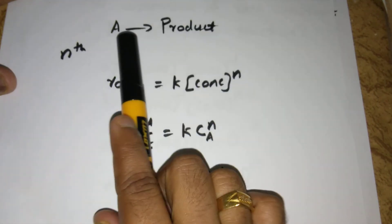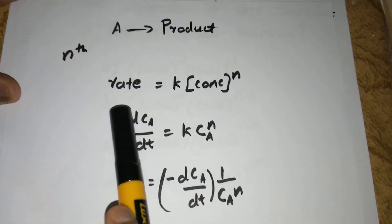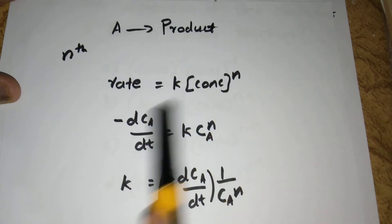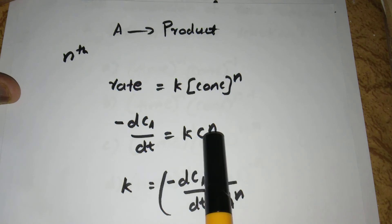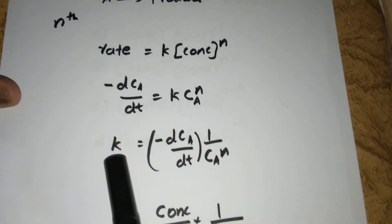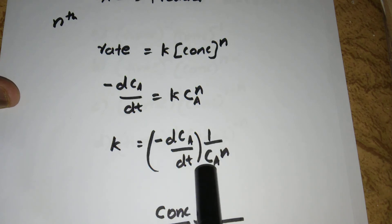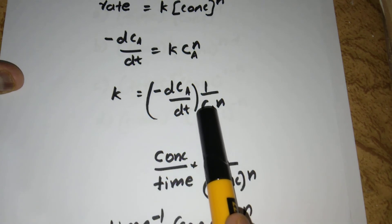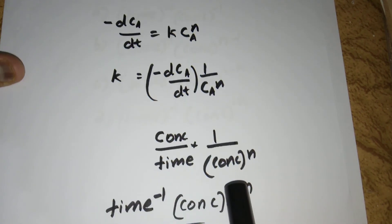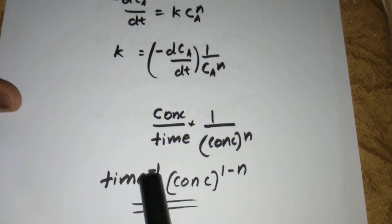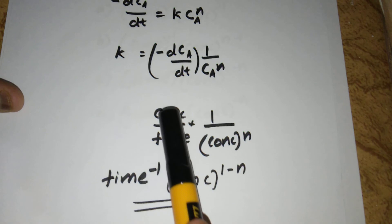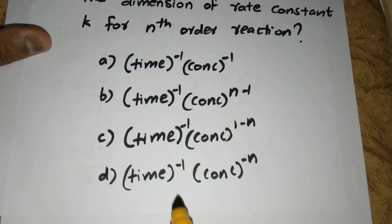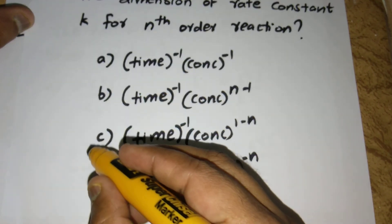For the reaction A gives product, for an nth order reaction: rate = K·concentration^n, so minus dCa/dt = K·Ca^n. Rearranging, K = (−dCa/dt)·(1/Ca^n). Here dCa is concentration and dt is time, and we have 1/concentration^n. Simplifying, K has dimensions of time⁻¹·concentration^(1−n). So C is the right answer.